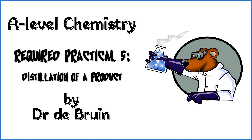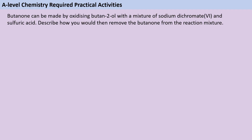This video is part of a series of exam question walkthroughs mainly focused on the methods for the AQA A-level chemistry required practical activities. This question is looking at required practical activity number five, which is how we can separate an organic product from its reaction mixture using distillation. Before I walk you through how I would approach this question, pause the video and have a go at answering it for yourself. Remember, this would be a six mark question, so you want to spend about six minutes trying to answer it.